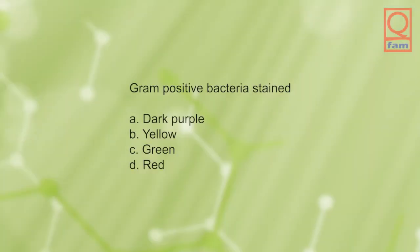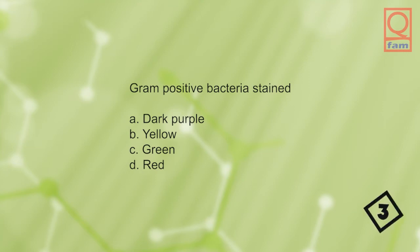Gram positive bacteria stained: A) dark purple, B) yellow, C) green, D) red. The answer is A, dark purple.